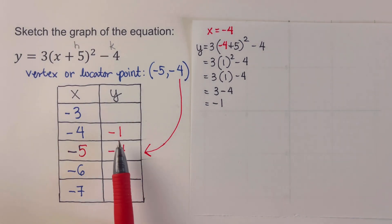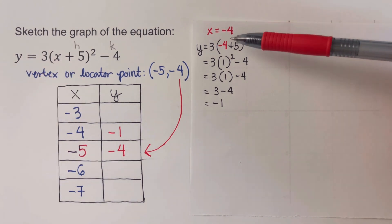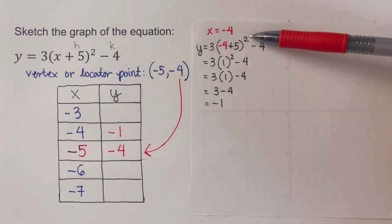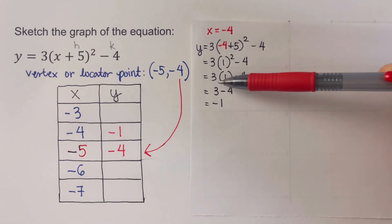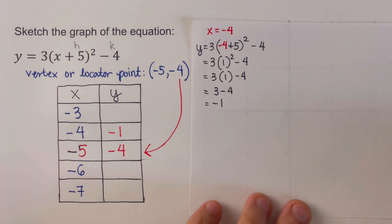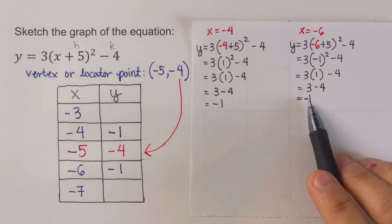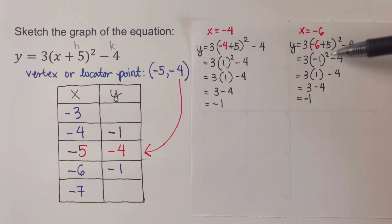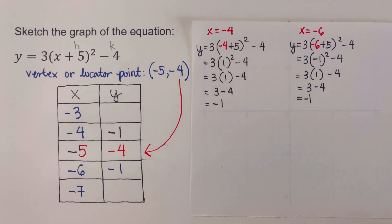When x = negative 4: negative four plus five is one, squared is one, times three is three, minus four equals negative one. When x = negative 6: negative six plus five is negative one, negative one squared is positive one, times three is three, minus four equals negative one. The remaining y-values for x = negative 3 and x = negative 7 are also calculated to complete the table.